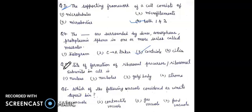Question 5: the site of formation of ribosomal precursor ribosomal subunits in the cell is — first, nucleus; second, nucleolus; third, Golgi body; fourth, stroma. The answer will be second, nucleolus.